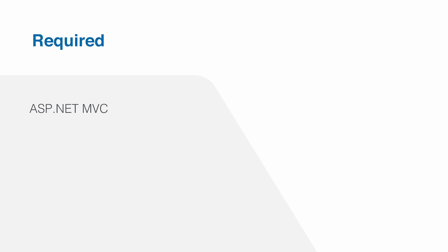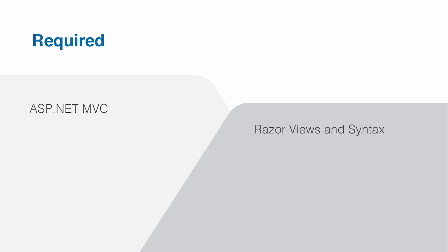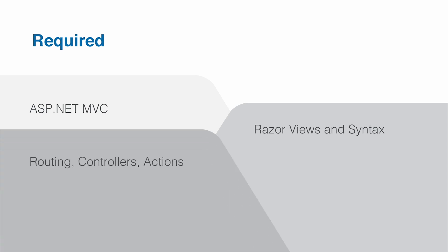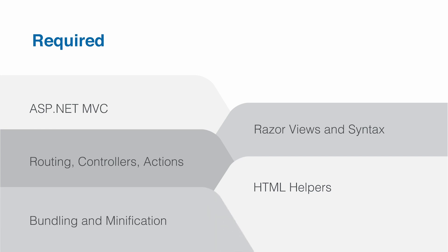We're going to focus on Telerik UI in this course and the HTML helpers that come with the library. Our interaction with writing ASP.NET MVC specific code will be very limited. That's why it's assumed that you already know the Razor view engine syntax and how to use Razor views. It's also assumed that you know about ASP.NET MVC routing, controllers, and actions. You should know how to use HTML helpers in your Razor views — we'll be using the ones that come with Telerik UI, which I'll sometimes also refer to as Kendo UI. You also need to know about bundling and minification that comes with ASP.NET MVC, as we'll be using it to reference our client side Kendo UI libraries.